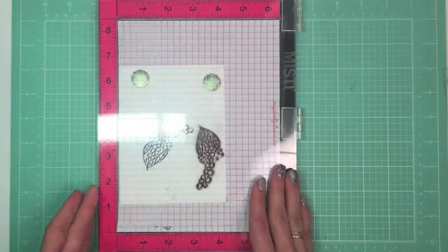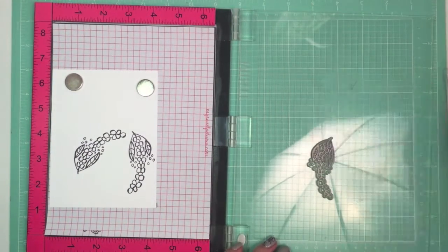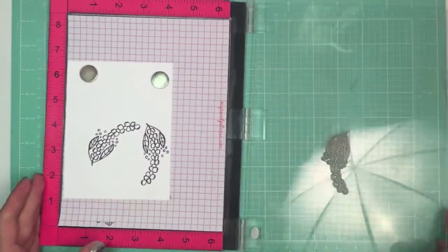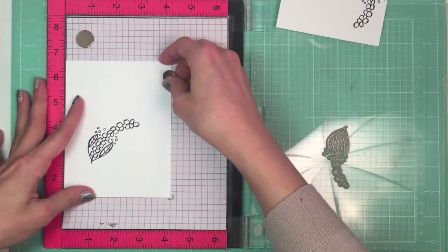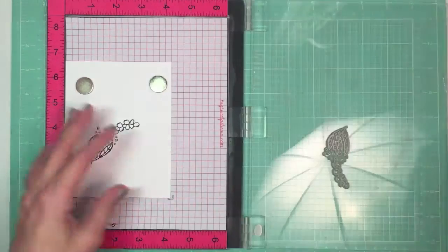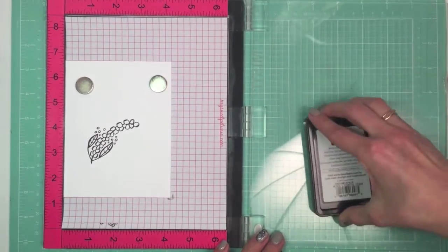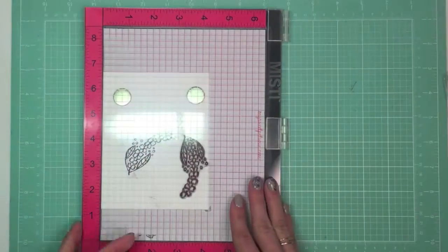Then the easy part comes on. MISTI is very easy to use. I'm changing my panels between stamping, applying ink each time and cleaning the stamps right at the MISTI door before repositioning. That's very important to do if you don't want to have any marks from ink residue.